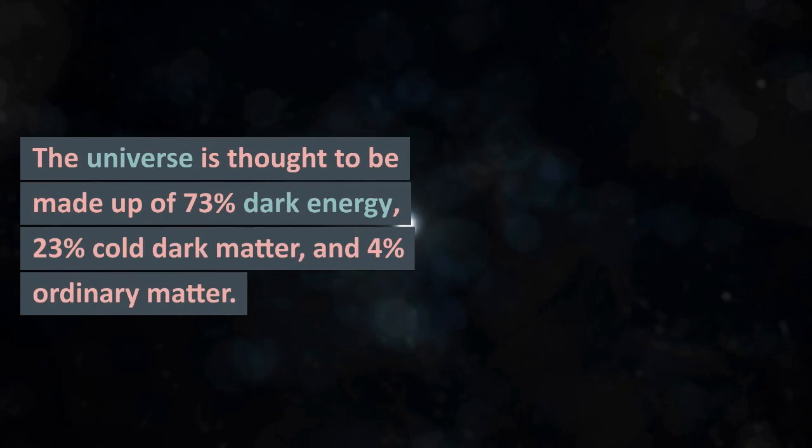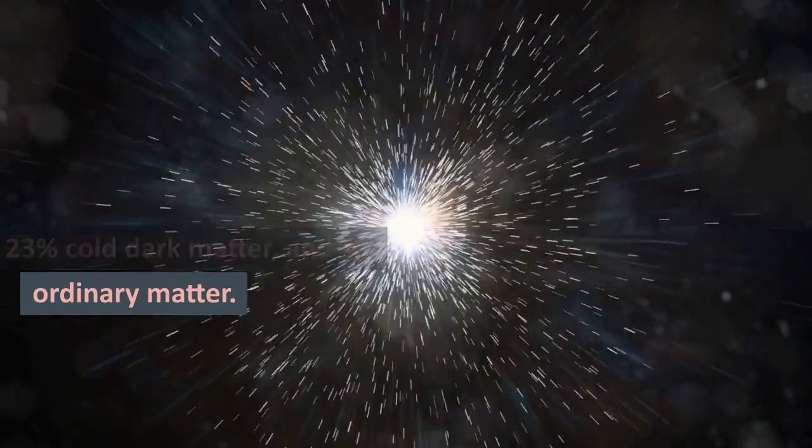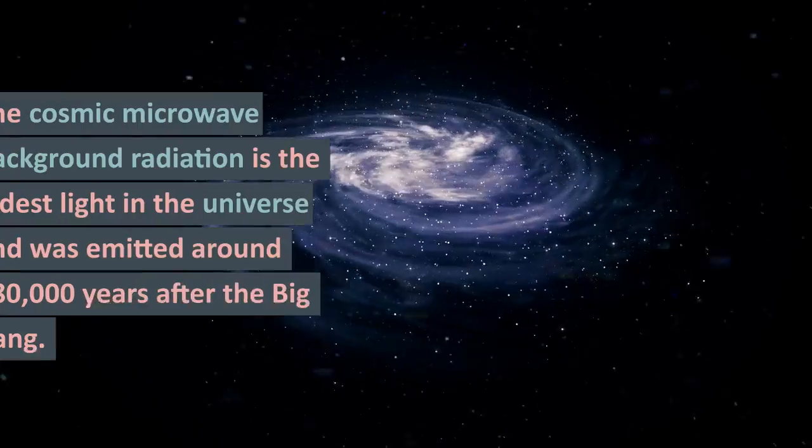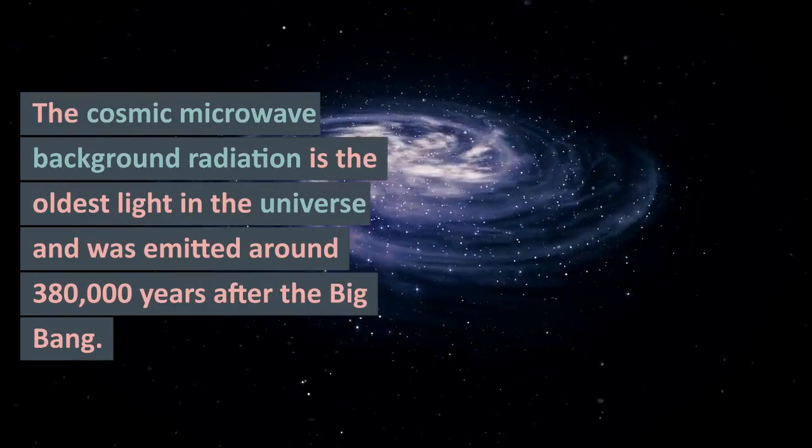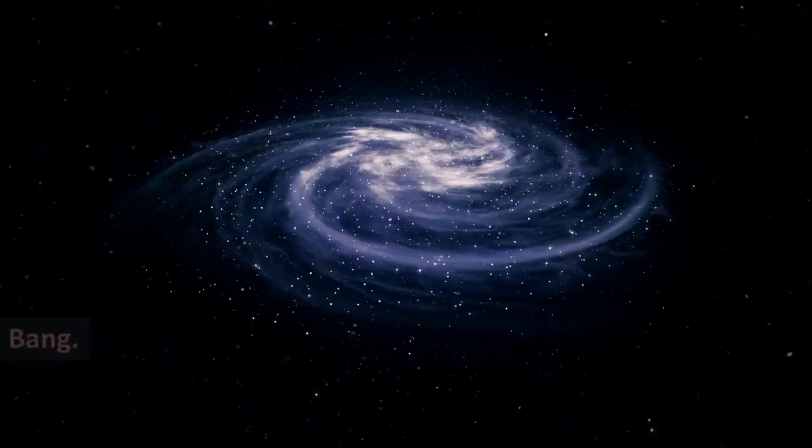The universe is thought to be made up of 73% dark energy, 23% dark matter, and 4% ordinary matter. The cosmic microwave background radiation is the oldest light in the universe and was emitted around 380,000 years after the Big Bang.